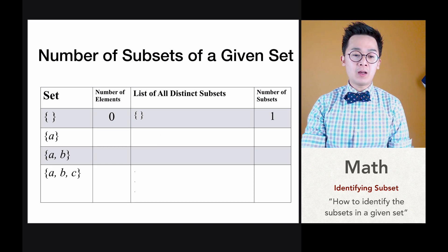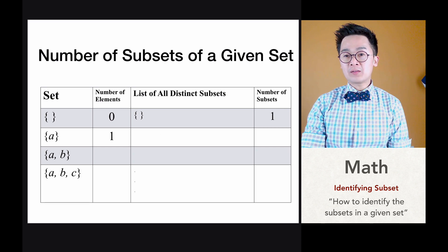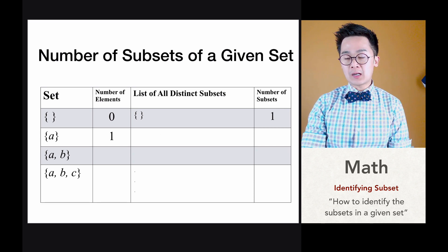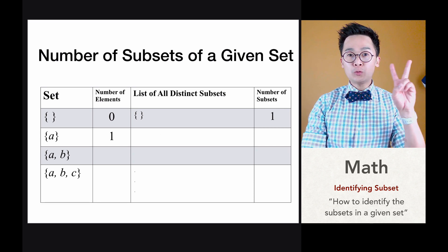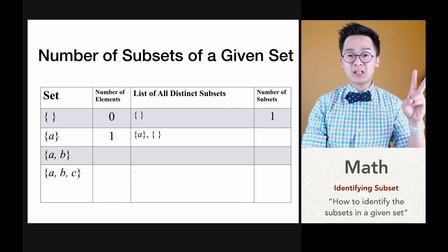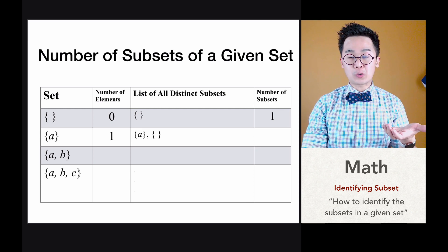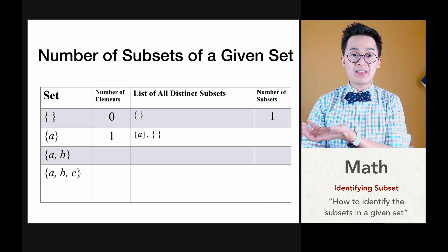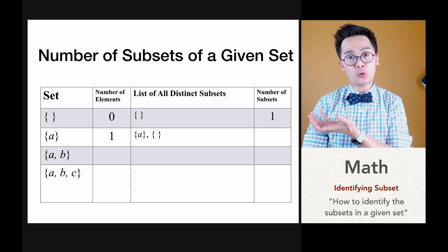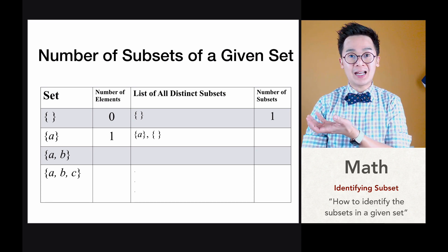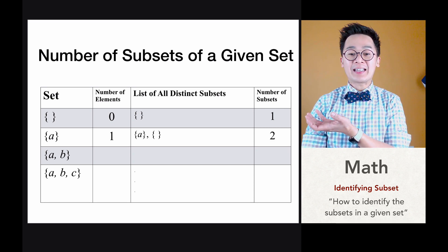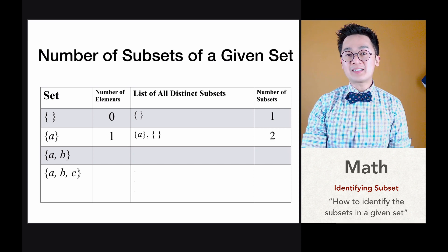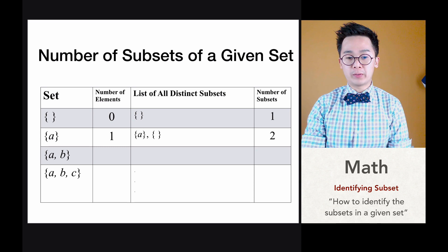For the second row, we have one element which is A. However, for the list of distinct subsets, we can count two subsets: subset {A}, which is the total number of elements inside the set, and then the null set, because the null set is always included as a subset. So here we have two distinct subsets for example number two.